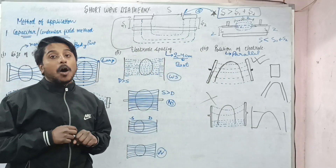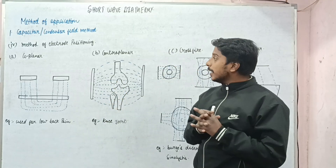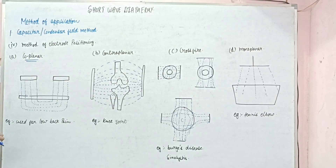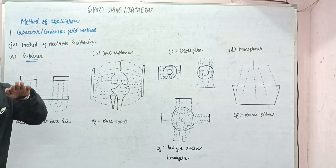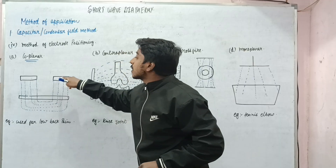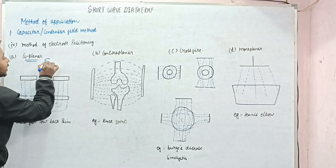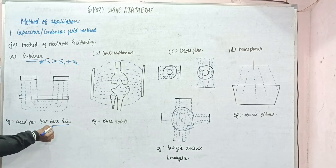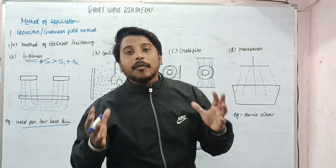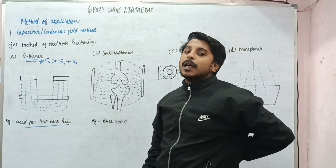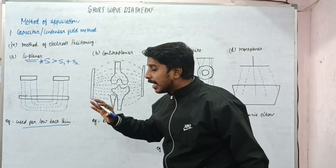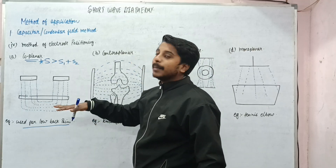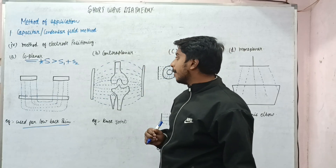Now we study the methods of electrode positioning. First is the coplanar method. Here the two electrodes are placed side by side, ensuring that S is greater than S1 plus S2. It is used for the back, such as for low back pain or trunk muscle conditions. Less deep heating is seen compared to the contraplanar method, so it is a weaker method.